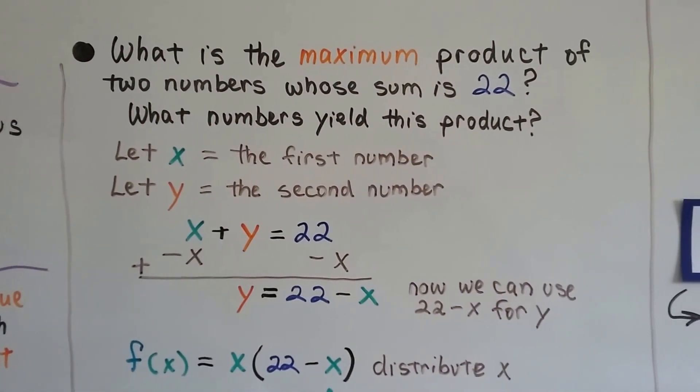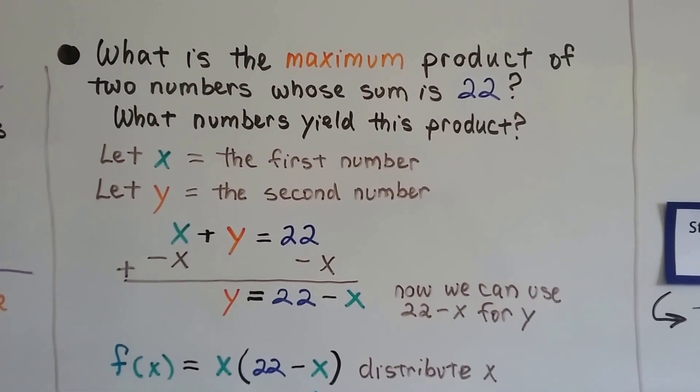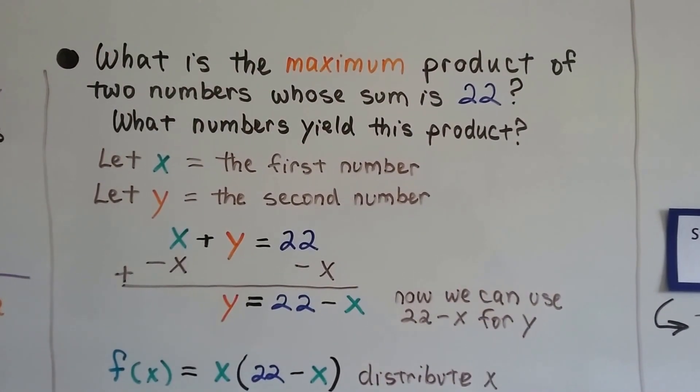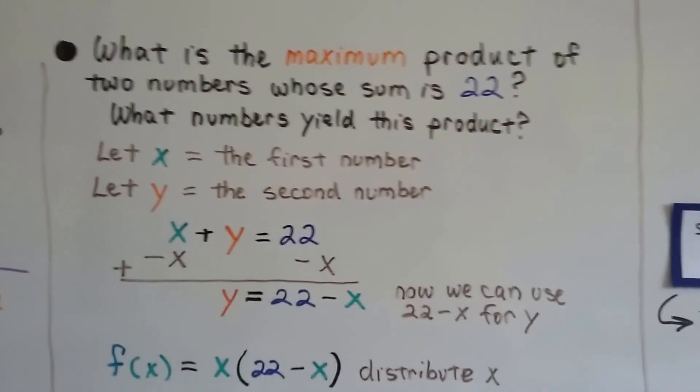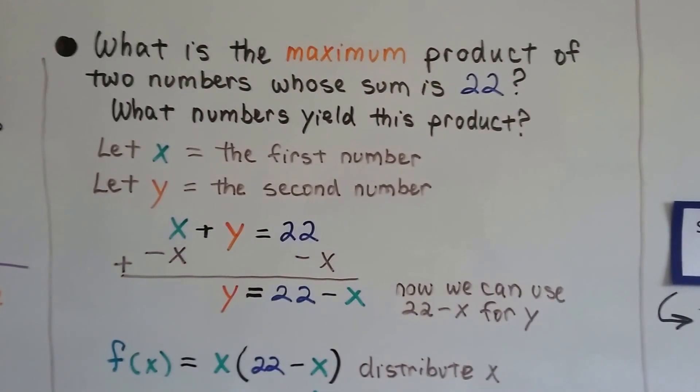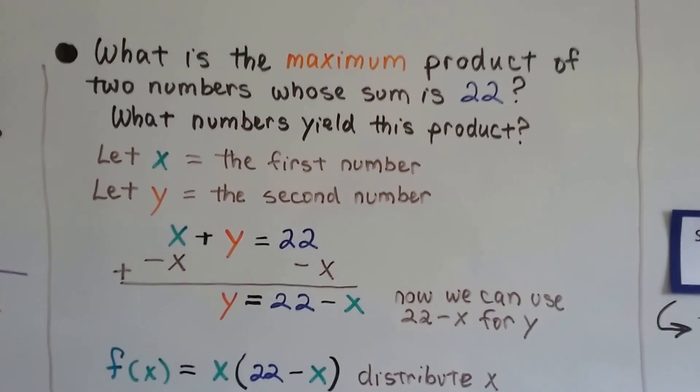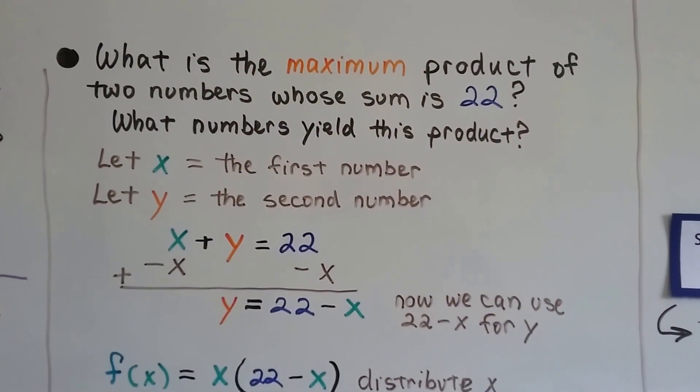So what's the maximum product of two numbers whose sum is 22? What numbers yield this product? We need two numbers that when added together are 22, and when multiplied together make a maximum product.